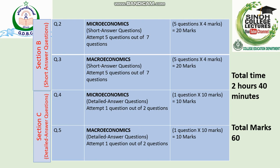The whole syllabus is divided into two parts — microeconomics and macroeconomics. Question number two focuses on microeconomics only. There will be seven questions given, from which five questions have to be attempted, and each question is for four marks, making a total of 20 marks for question number two.